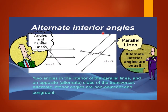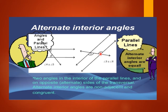Now alternate interior angles: two angles in the interior of the parallel lines — interior means inside — and they are opposite to each other on alternate sides of the transversal. Alternate interior angles are non-adjacent and they are congruent, meaning they will be equal in measurement. Suppose angle three is 30 degrees; according to that property, angle six will also be 30 degrees.